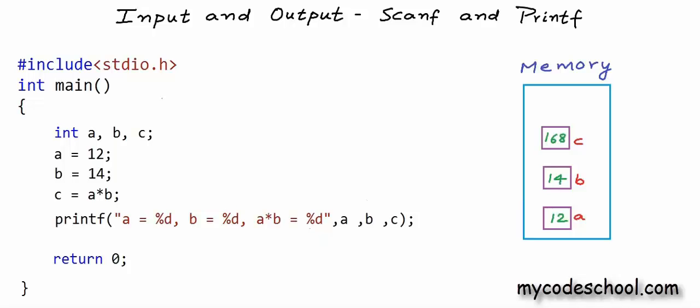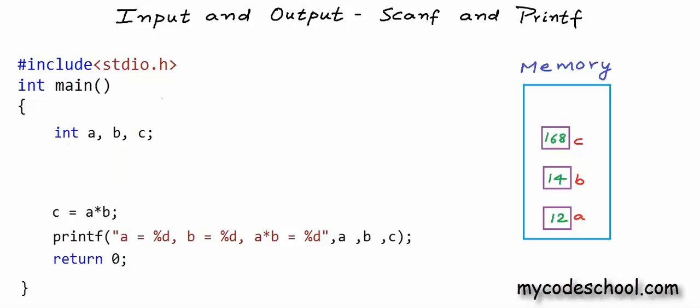We have a program here that's calculating the product of two numbers a and b, but we are setting the values of a and b in the code itself. Of course I can change the code if I want different values, but ideally my program while it's executing should ask the user to input a and b. So I'll erase these two lines where I'm setting values of a and b, keep everything else, and after the declaration I'll make a call to a special function in the stdio.h library.